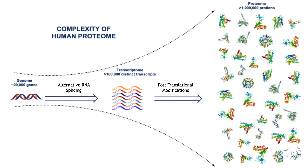This diagram depicts the idea of a proteome being larger than the genome quite well. The genome is relatively small — in this example it's 20,000 genes — compared to the number of protein molecules it can produce. In this diagram, it shows it can produce over 1 million proteins.